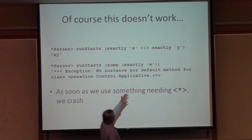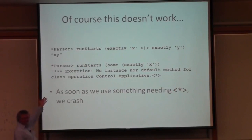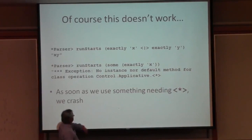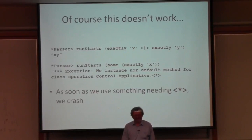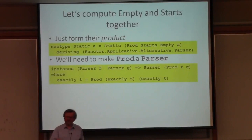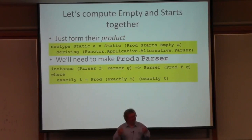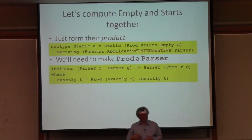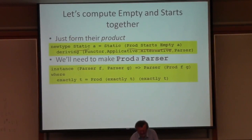Here are a couple of examples. Let me analyze the grammar exactly X or exactly Y. The analyzer says that can start with X and it can start with Y — that XY just contains X and Y. But as soon as I take anything that contains star, like some exactly X, we're going to try and call a method that doesn't exist and get a crash. That's a bit of a shame, but I have an idea. If I can't define starts by itself, let me compute empty and starts together. Applicative functors are composable. Let me just take the product of starts and empty, and define a new functor called static. Static of A will do all the static analysis of my grammar, and I'll derive functor, applicative, alternative, and parser instances.